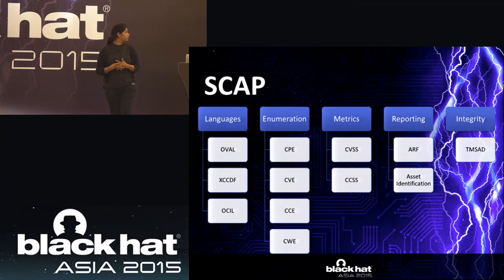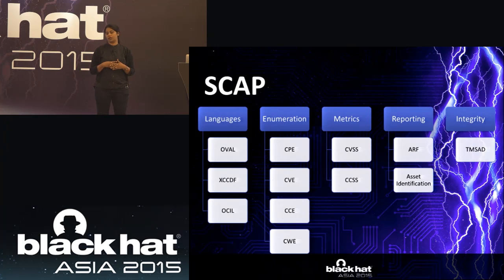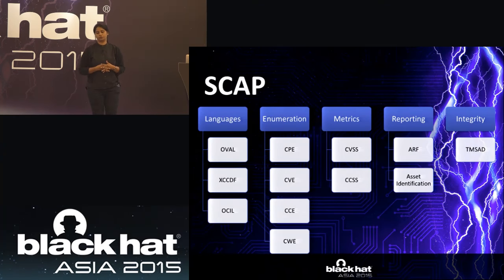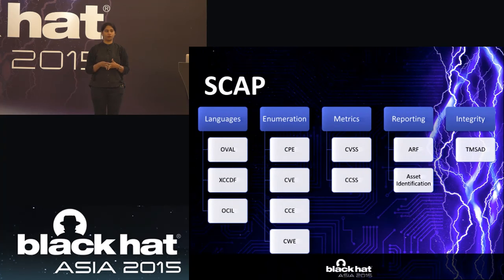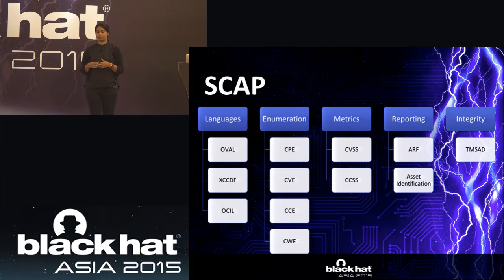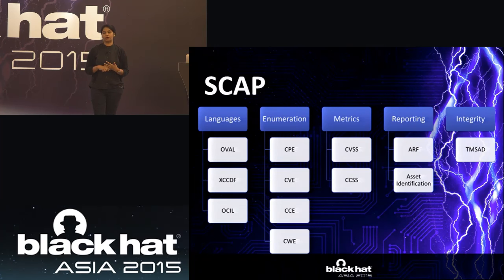That's where SCAP came into being — the Security Content Automation Protocol. It is a set of open standards that flourished because of community ideas and is still maturing. The enumerations include CPE (Common Platform Enumeration), where products, applications, hardware, and operating systems are given a nomenclature. All vulnerabilities are enumerated with CVE IDs. CCE covers common configuration enumeration, and CWE covers common weaknesses — every CVE falls under some existing weakness.